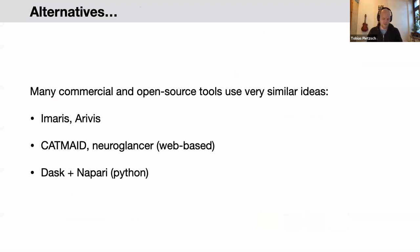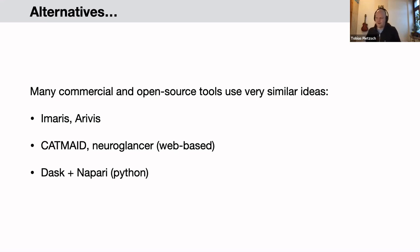These ideas are not unique — they're actually quite obvious, and many commercial and open-source tools use very similar approaches: commercial tools like Imaris and Arivis, web-based tools such as Catmaid and Neuroglancer, and Python tools such as napari, which implements most of these ideas.